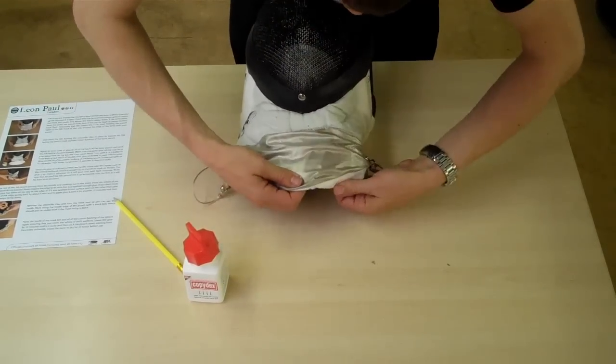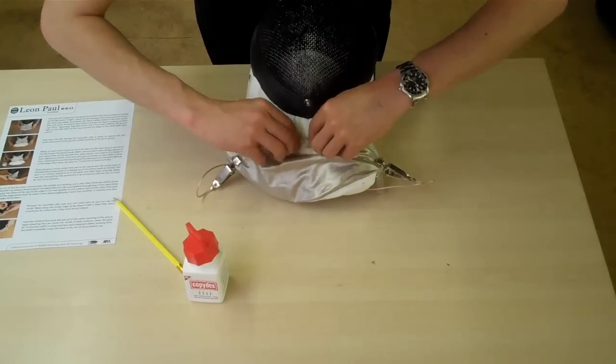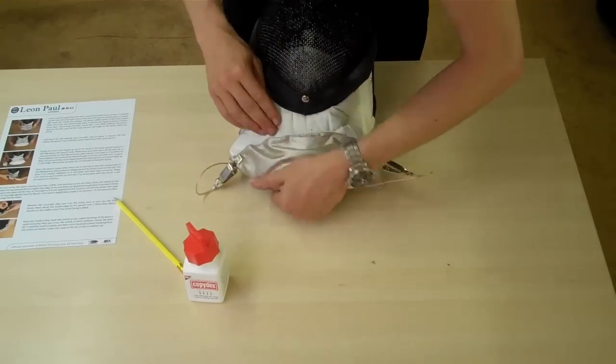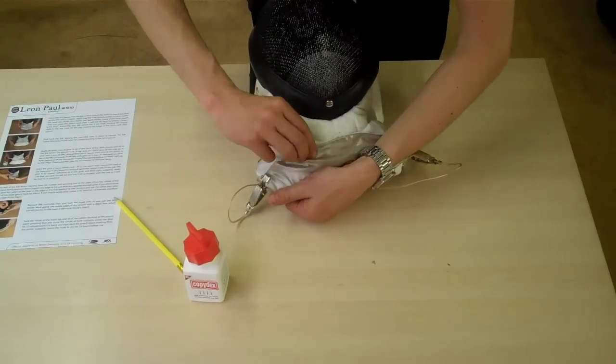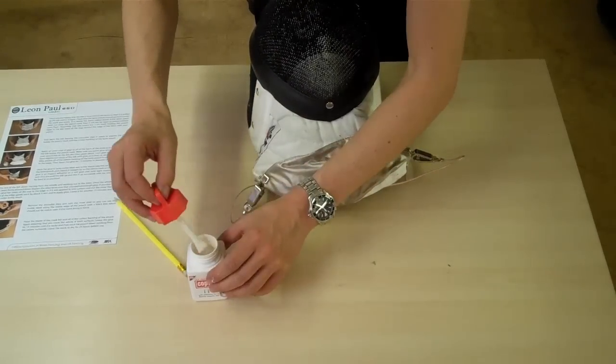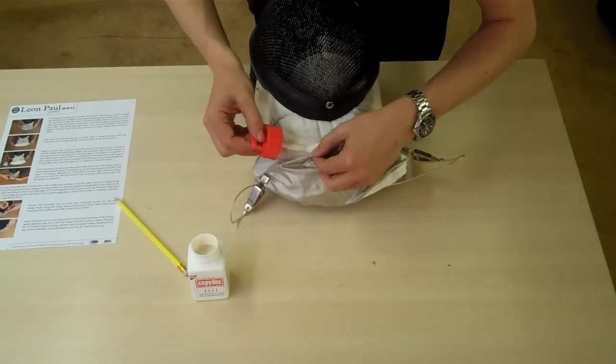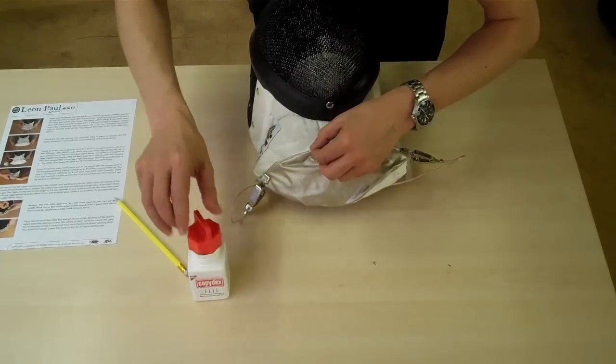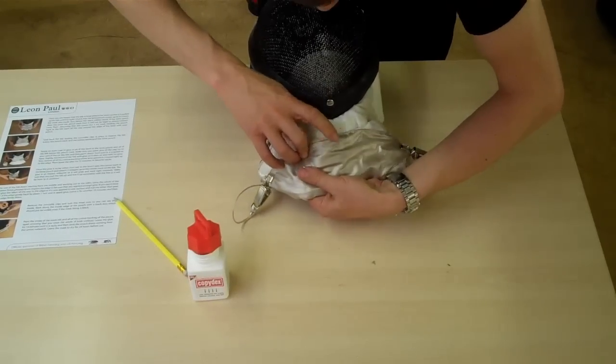Then what you can start doing is adding glue to areas where you haven't put enough glue. I haven't quite put enough glue there, so I'll just take a little bit more, place it there, and then place it down.